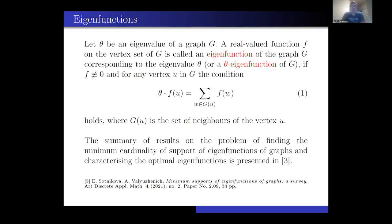Let theta be an eigenvalue of a graph g. A real-valued function f on the vertex set of g is called an eigenfunction of g corresponding to the eigenvalue theta — or just a theta-eigenfunction of g — if f is not identically zero and for any vertex u in g, theta times f(u) equals the sum of f(w) over all neighbors w of u. The study of the minimum cardinality of the support of eigenfunctions of graphs and characterizing optimal eigenfunctions is presented in work by Sotnikova and Valyuzhenich.